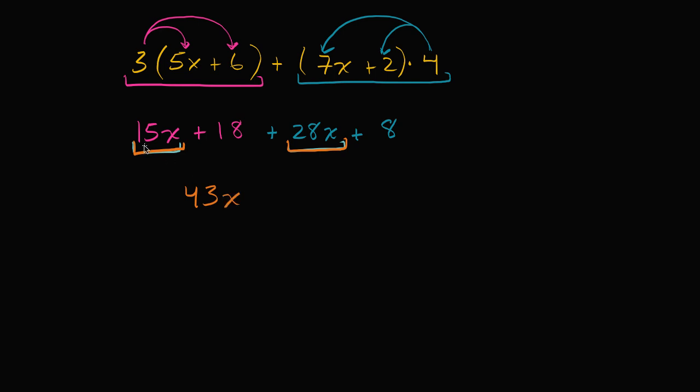So 43 x's, 15 x plus 28 x's, I added the coefficients there. That's going to be 43 x's and then 18 plus eight. Let me do this in a new color. So 18 plus eight is going to be 26.